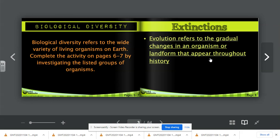Go ahead and complete the activity on pages six and seven by investigating the listed groups of organisms. We have groups of, for example, bacteria is one group. Plants is another group, reptiles, birds, and then mammals. You should be able to write down some interesting facts about each of these groups of organisms.